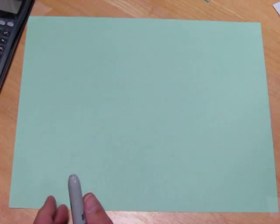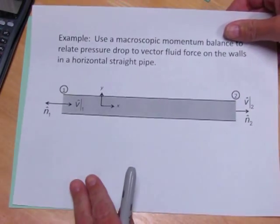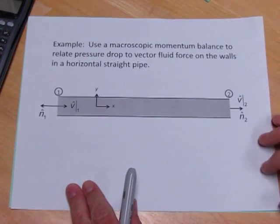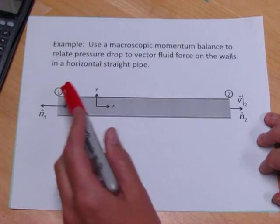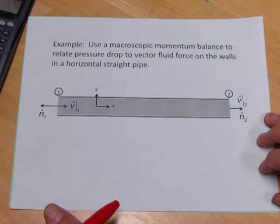The problem I'm considering is shown here. Use a macroscopic momentum balance to relate pressure drop to vector fluid force on the walls in a horizontal straight pipe.